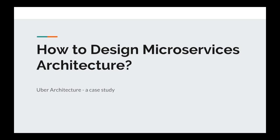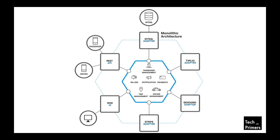We are taking Uber's architecture as a case study; this architecture is available on the Uber website. So here is the monolithic architecture of Uber. There is a REST API through which the passenger and the driver connect — from the mobile app it connects to a REST API, and that connects to a monolithic backend server. From the web UI it also connects to the same server. There is a Stripe adapter — Stripe is for billing, providing billing APIs out of the box.